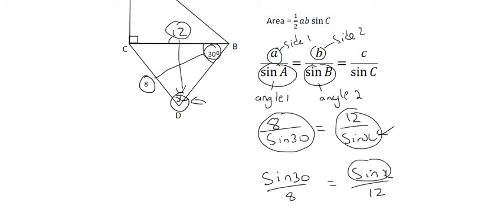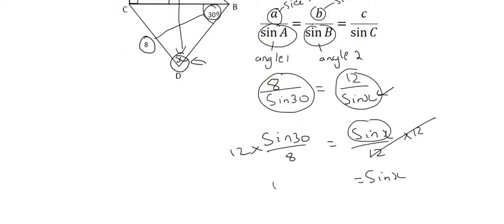To get X alone, you would then times both sides by 12, because what you do to the one side, you do to the other. And so we end up with sine of X equals to 12 times by the sine of 30 divided by 8.